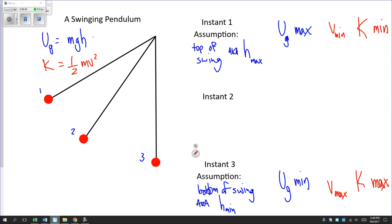And one of these we can actually quantify. V min is really V equals zero. And so actually, we can say that K is, we can quantify that K is zero at the top.